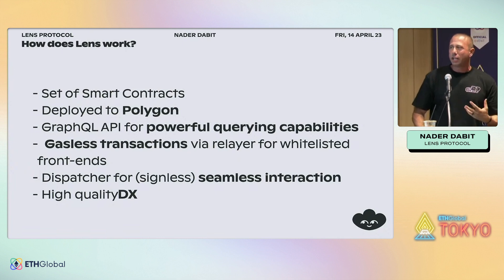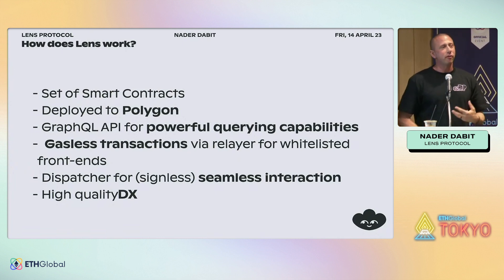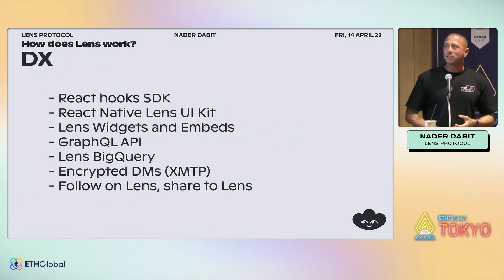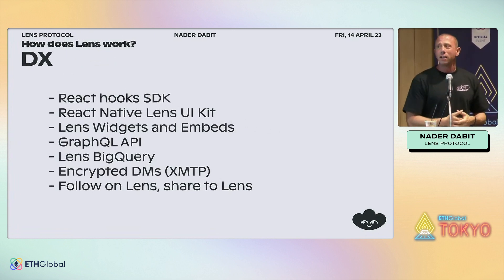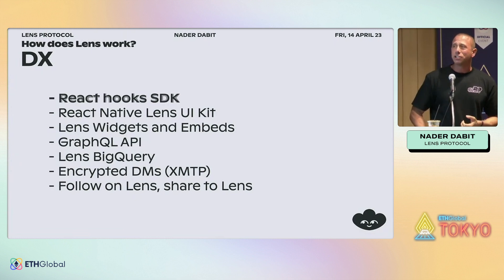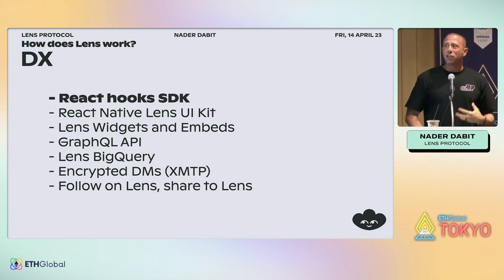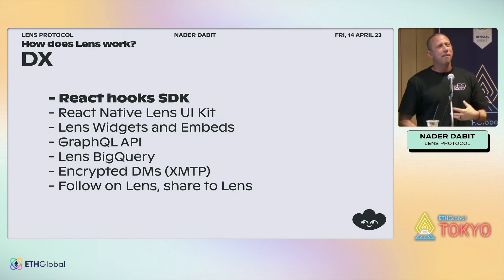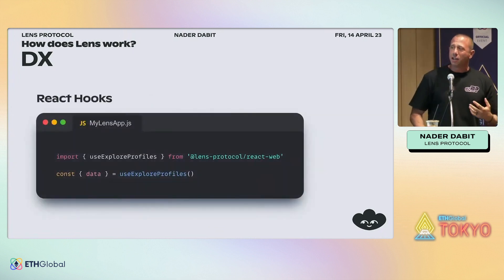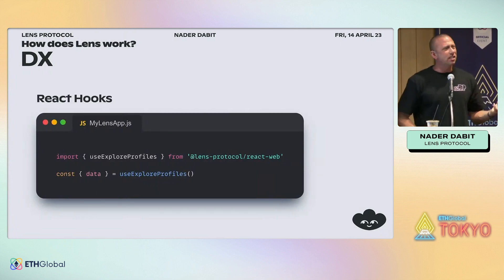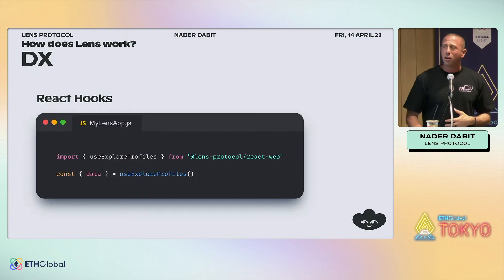The other big focus for us is the developer experience. The DX includes work beyond just the API. One of the things launched in the last few months is the React Hooks SDK, which abstracts away the GraphQL API so you don't have to write long GraphQL queries, deal with authentication, or manage your tokens. In the past, a query needed at least 25 or 30 lines of code with a GraphQL client setup. With the Hooks SDK you can do it in as little as two lines. Here we're importing a hook called `useExploreProfiles` and pulling the data out to use however we want.